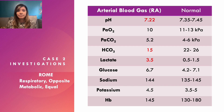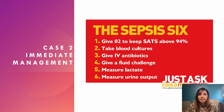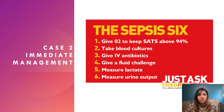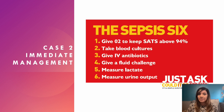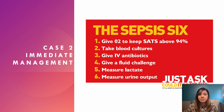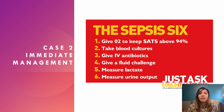Thinking about the high lactate, we need to action the Sepsis 6 — a really important protocol no matter where in hospital you're working. You give three things and take three things. Give: oxygen to keep sats above 94%, IV antibiotics (check local guidelines such as the Microguide app — generally broad spectrum), and IV fluids. Take: bloods and blood cultures, lactate, and measure urine output with a urine dipstick to check for urinary infection.